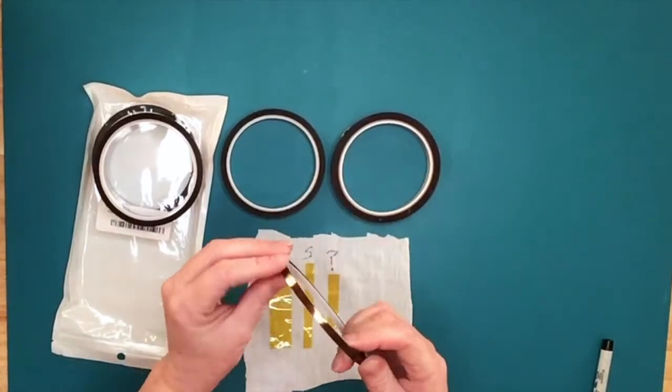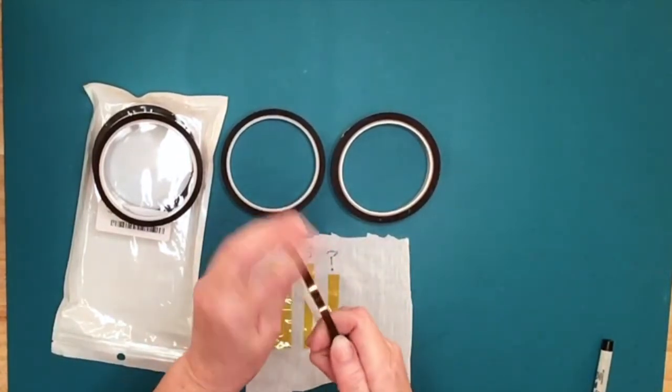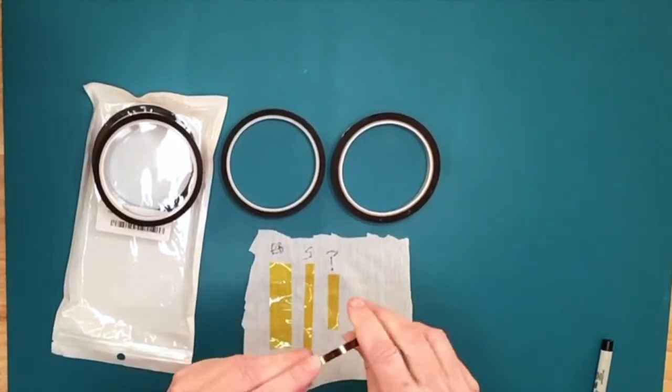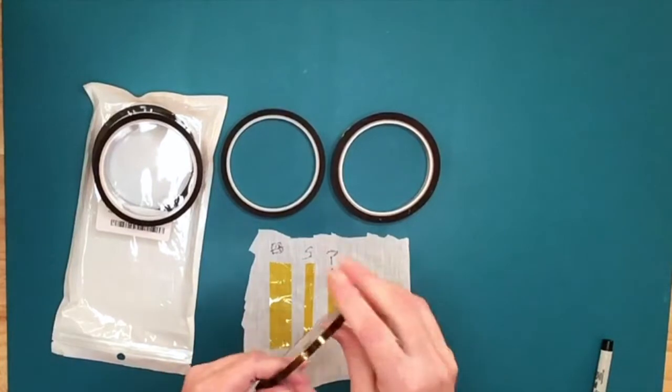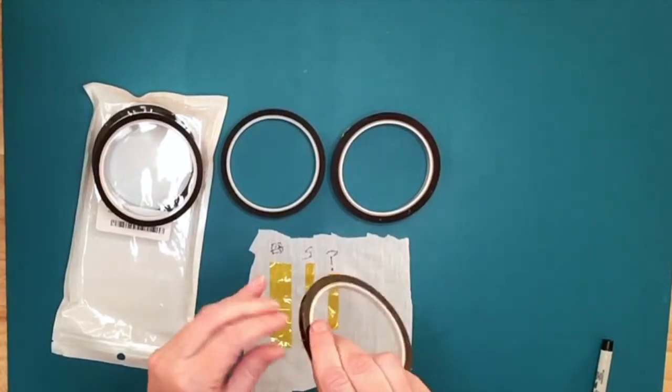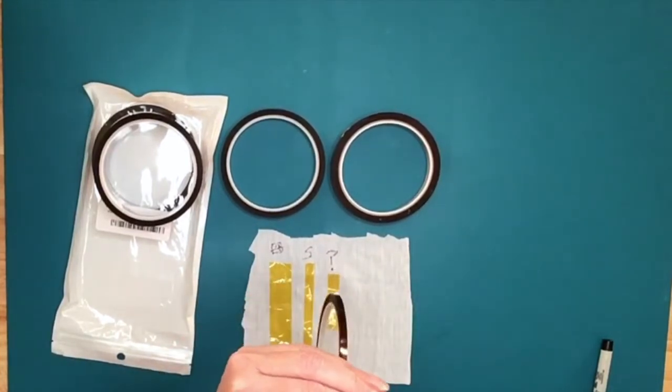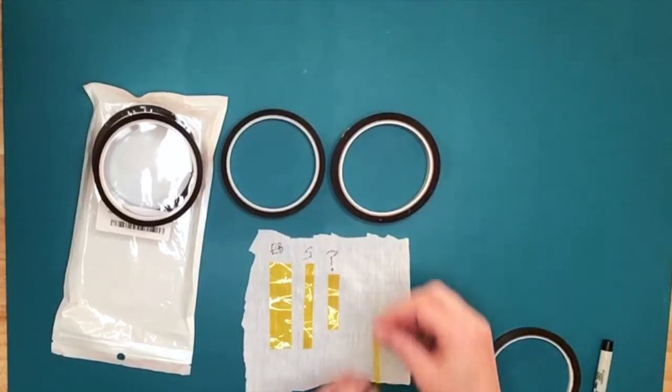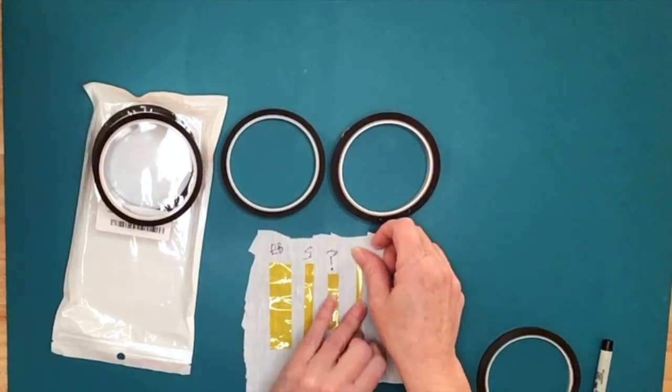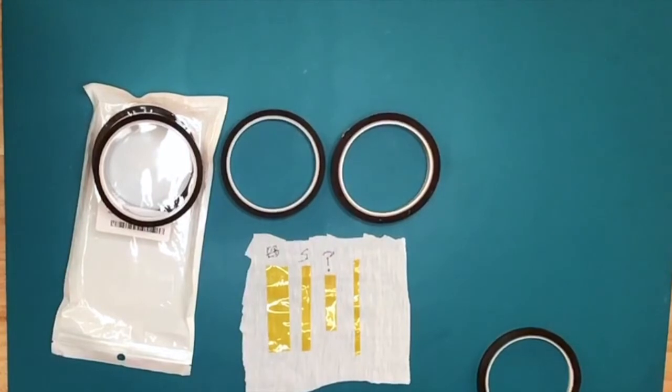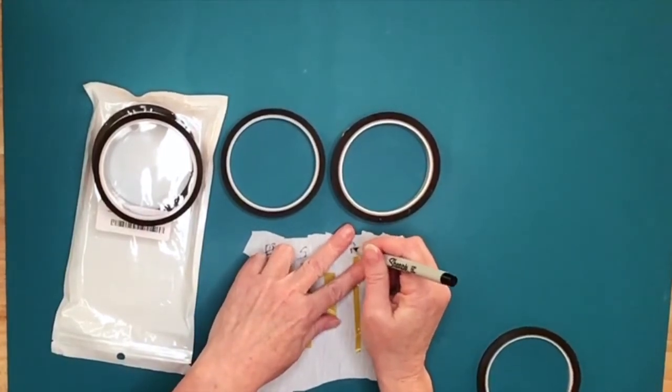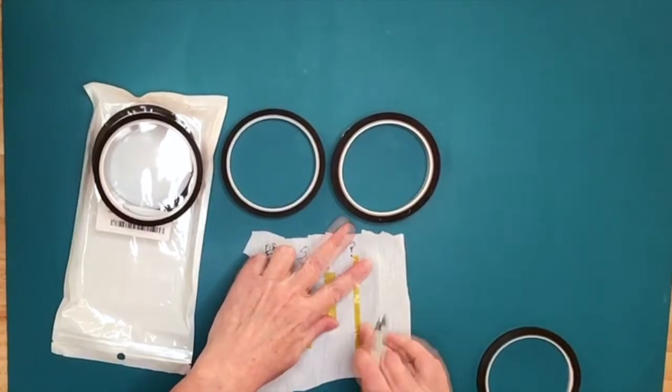And then this last roll, this is the one that came with some sublimation blanks off of Amazon. I bought these little, I think they were called wallet pockets, something like that. What you do is you sublimate on them, and then you attach them to the back of your phone case, and you can keep like your identification and a credit card in it. And like I said, until last night, this roll had never been used. I just didn't have the need for this really thin sublimation tape.